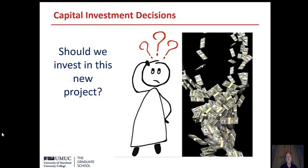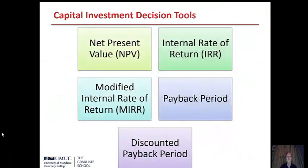Capital investment decisions are some of the most important decisions that a company makes. They involve investments of large amounts of money that potentially could not be returned for years. If companies make the wrong decisions, they could potentially lose a lot of money or go bankrupt. If they make the right decisions, they could be extremely successful. There are a lot of mathematical tools that companies can use in attempting to evaluate whether or not potential projects could be profitable.